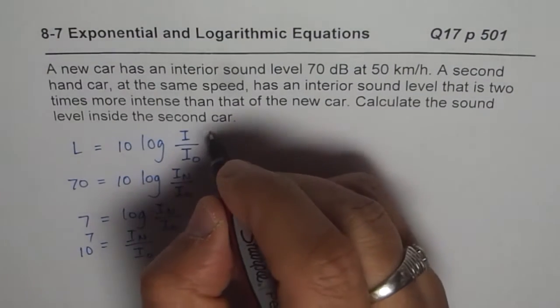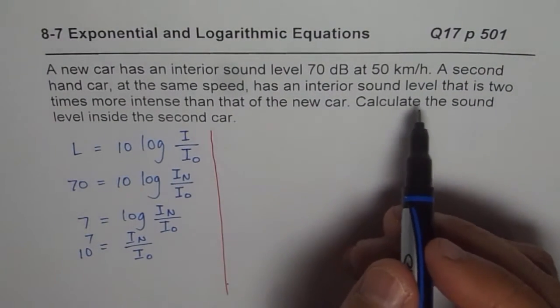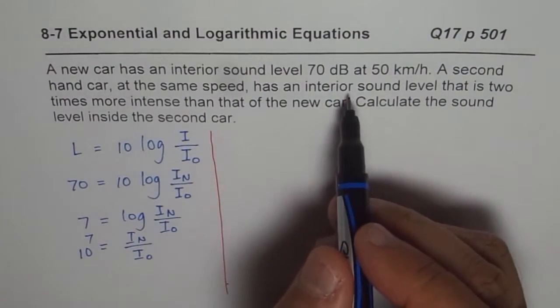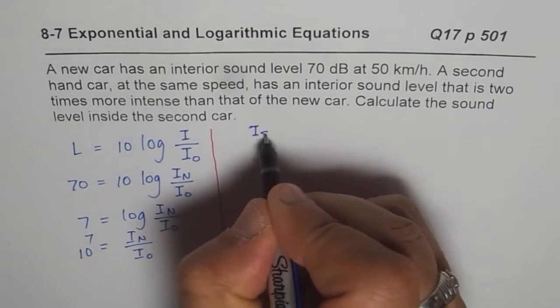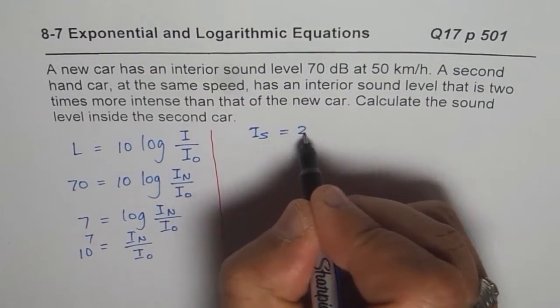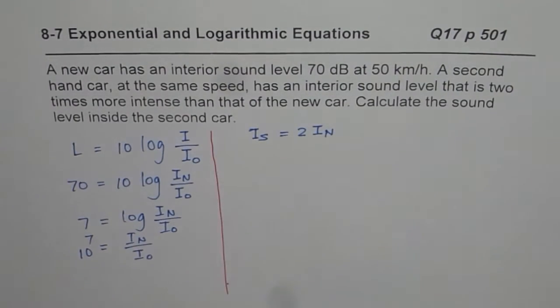Now for the second-hand car, what we are given here is that the intensity is twice. So let us say I is second-hand car, that is two times intensity of new car. So that is what is given to us.